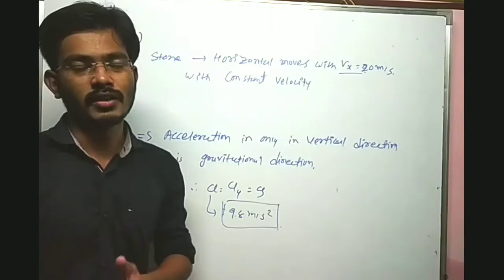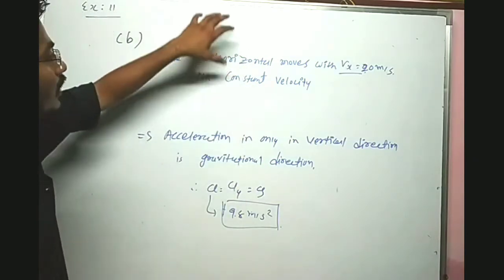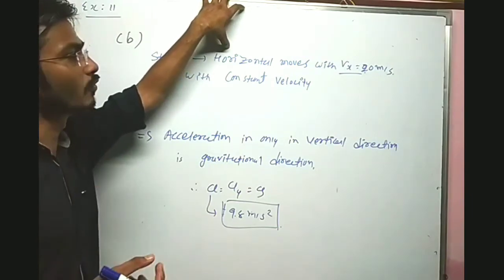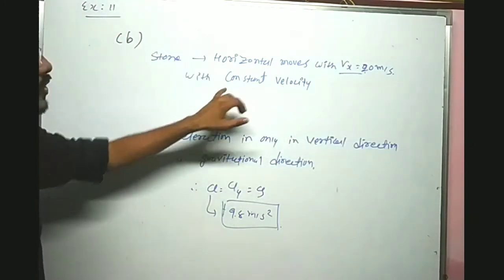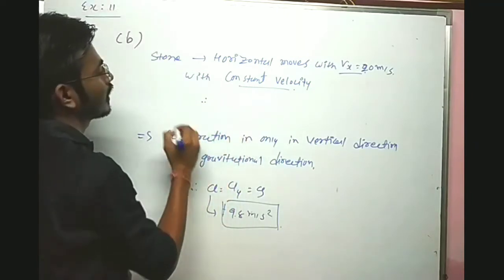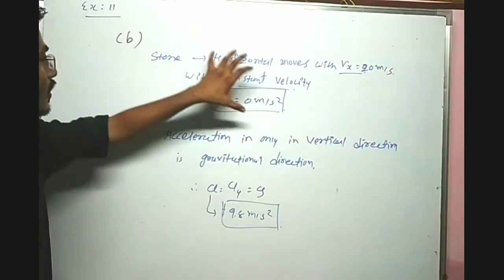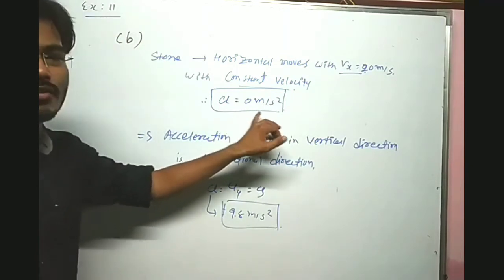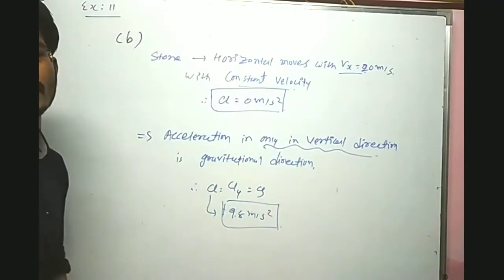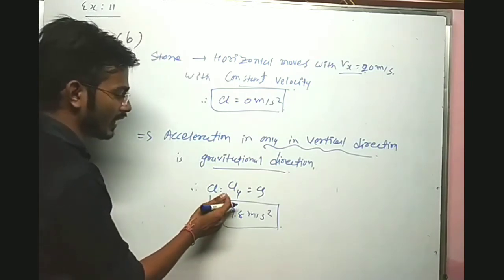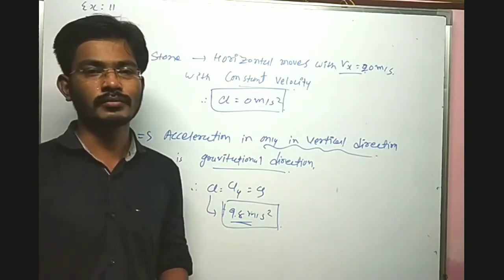Now we have to find the acceleration of the stone. In the horizontal direction, the stone is moving with constant velocity vx = 20 meter per second, and since velocity is constant, horizontal acceleration ax = 0 meter per second square. The acceleration exists only in the vertical direction, which is due to gravity. So ay = g = 9.8 meter per second square.